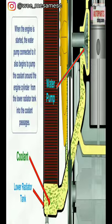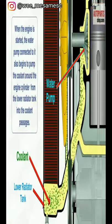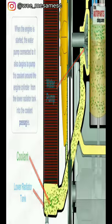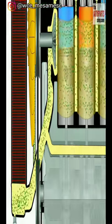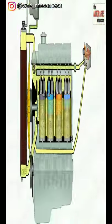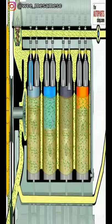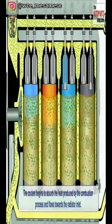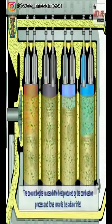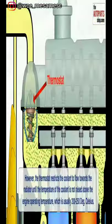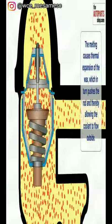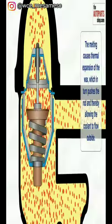When the engine is started, the water pump connected to it also begins to pump the coolant around the engine cylinder, from the lower radiator tank into the coolant passages. This flow of the coolant is from the lower tank to the outlet for the radiator. The coolant absorbs the heat and flows towards the radiator inlet. Then the thermostat lets the coolant flow to the radiator.